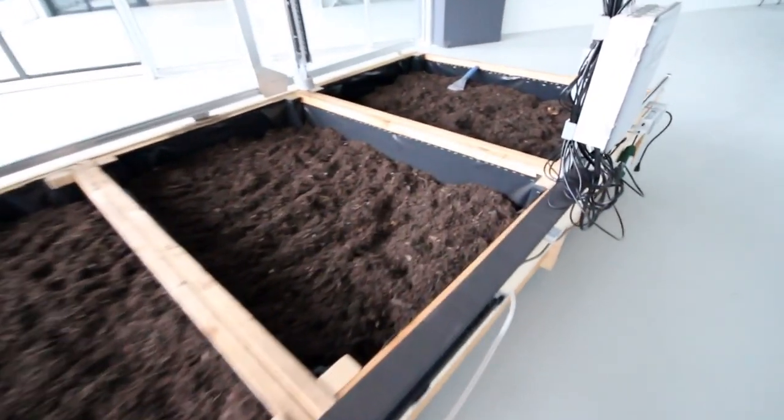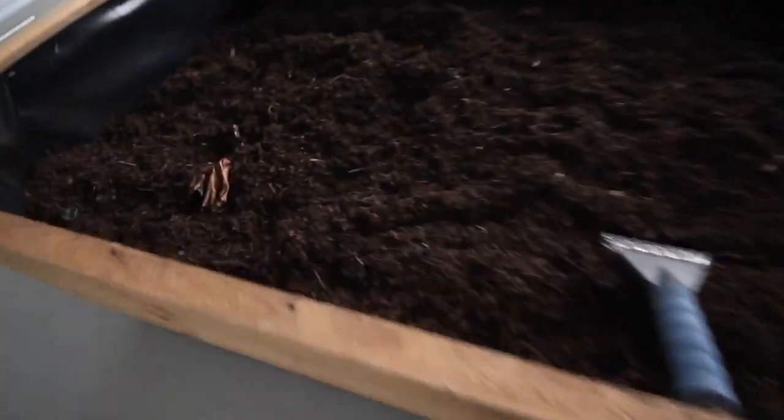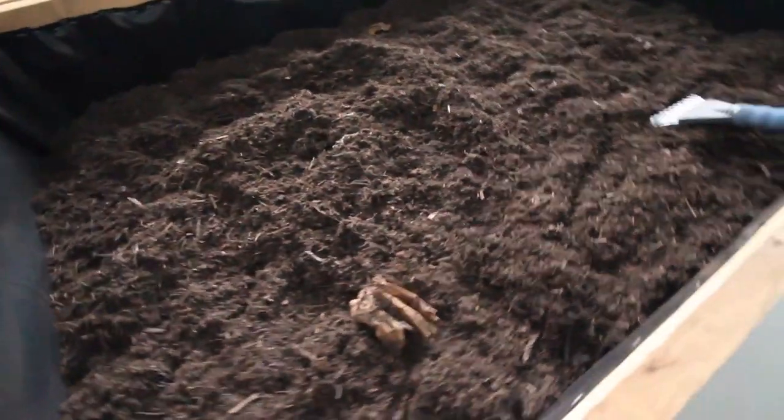Today the last component of the FarmBot is coming in - the soil. One cubic meter of soil, the source of all that grows. The soil where we're gonna plant our seeds and get our first crops from. It's going to be put in the grow boxes and we'll start growing, hopefully, at the end of the day.